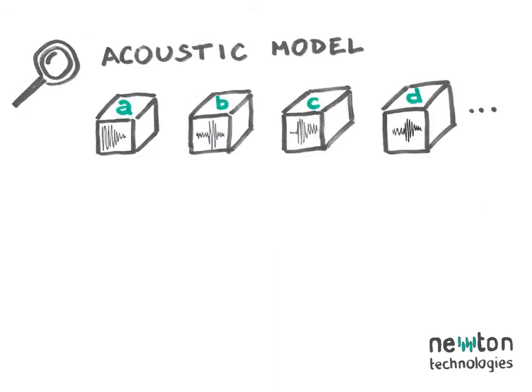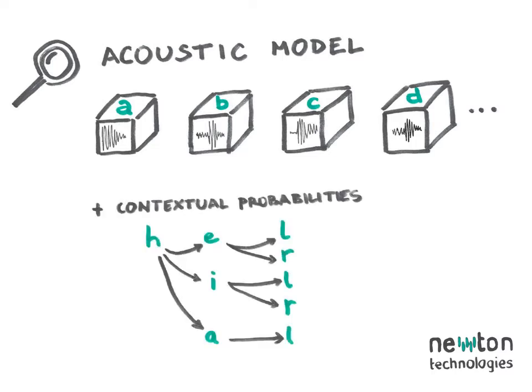You can imagine the acoustic model as a set of building blocks — boxes — which contain models for all phones in a given language. There are boxes labeled A, B, C, and so on, depending on which phones are used in the particular language. On top of that, part of this construction set are also contextual probabilities — this means how likely a phone is to follow another.